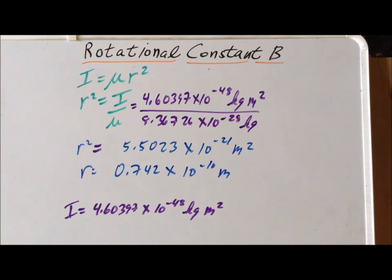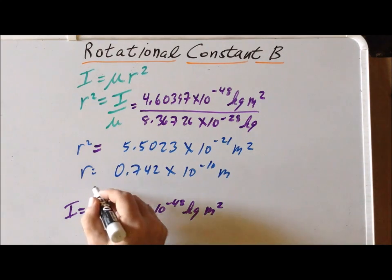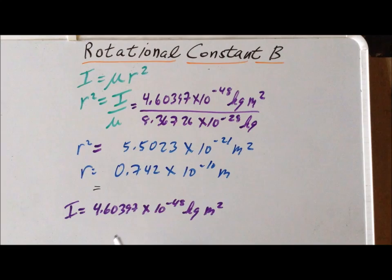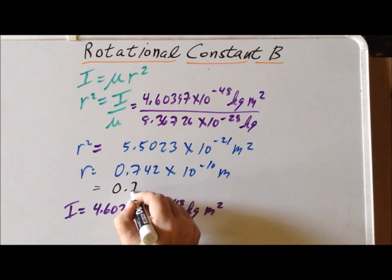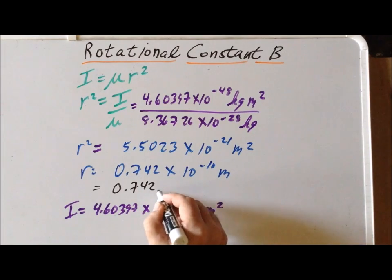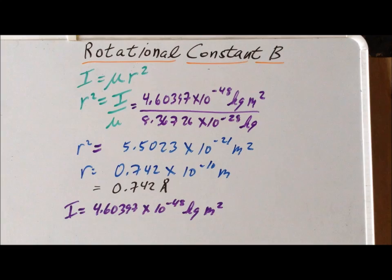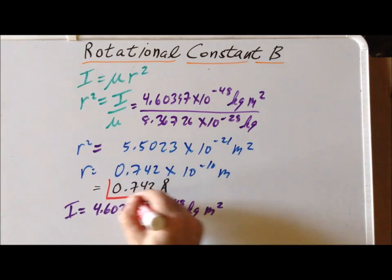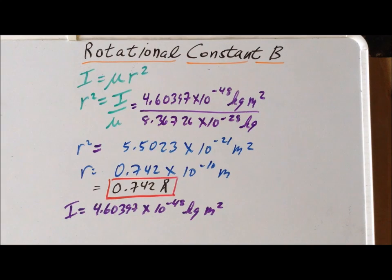Using a convenient conversion, recall that 10 to the minus 10 meters is 1 angstrom, so this gives us that the hydrogen-hydrogen bond length in H₂ is equal to 0.742 angstroms. Thank you very much for your attention. Have a good one.